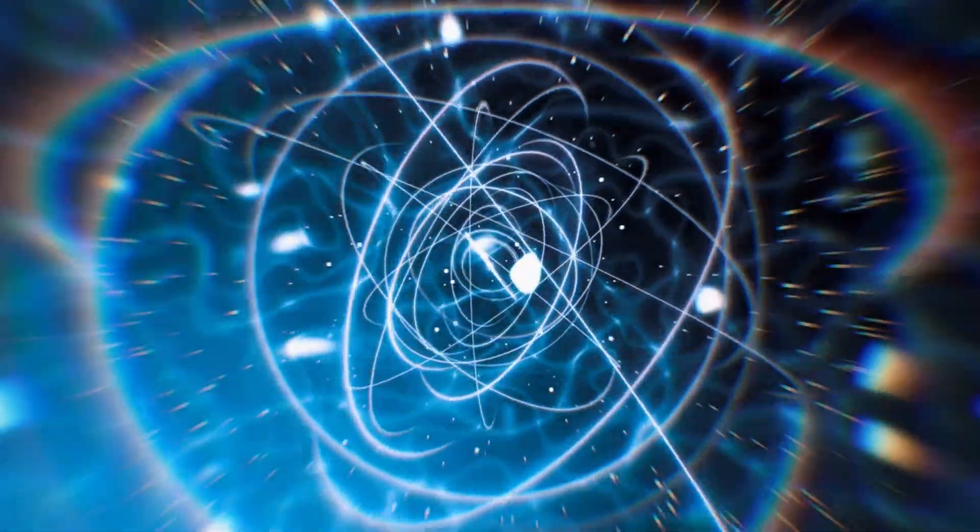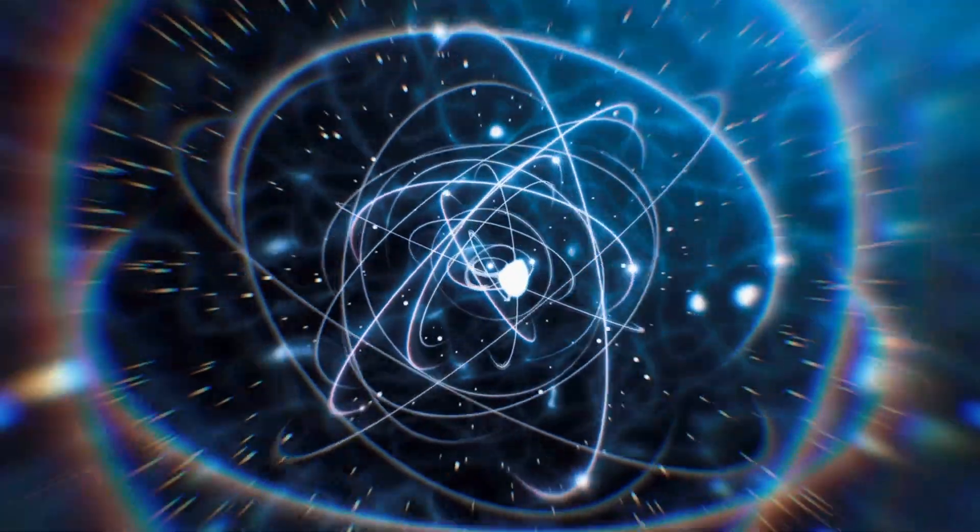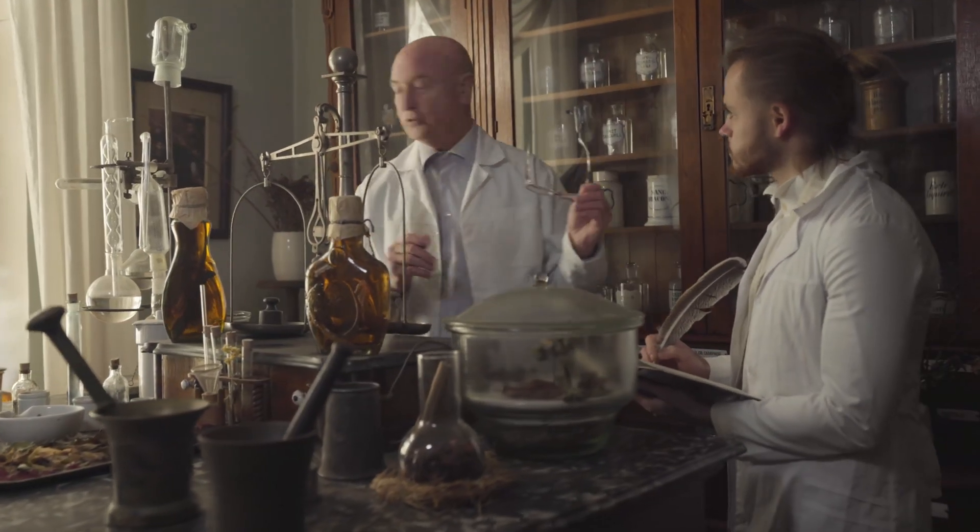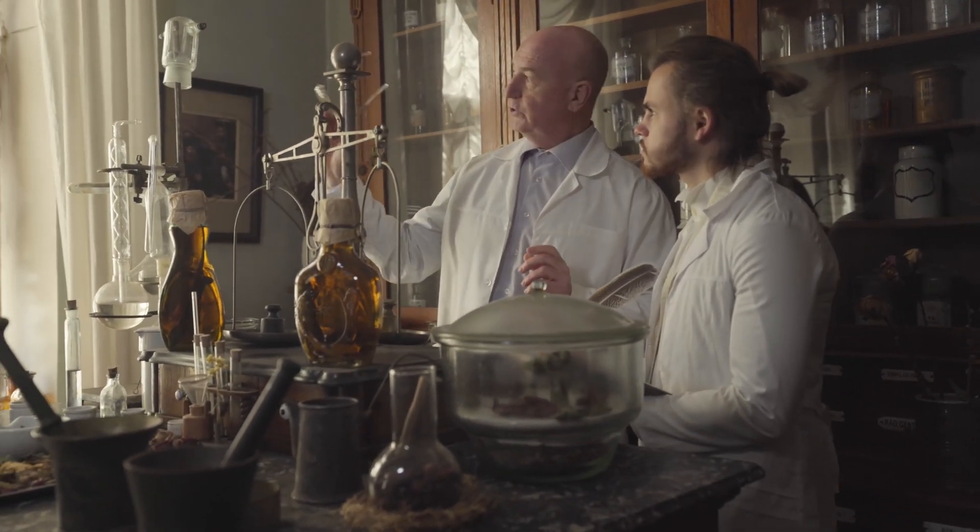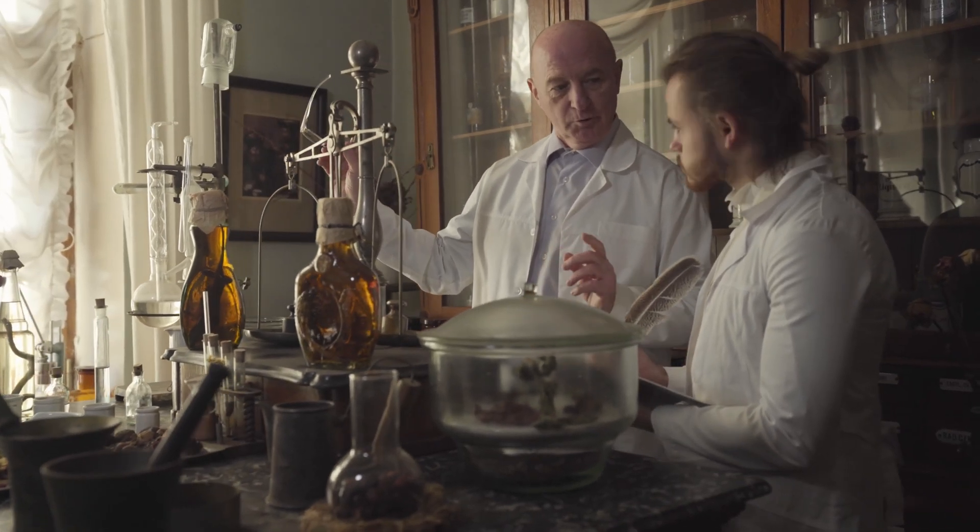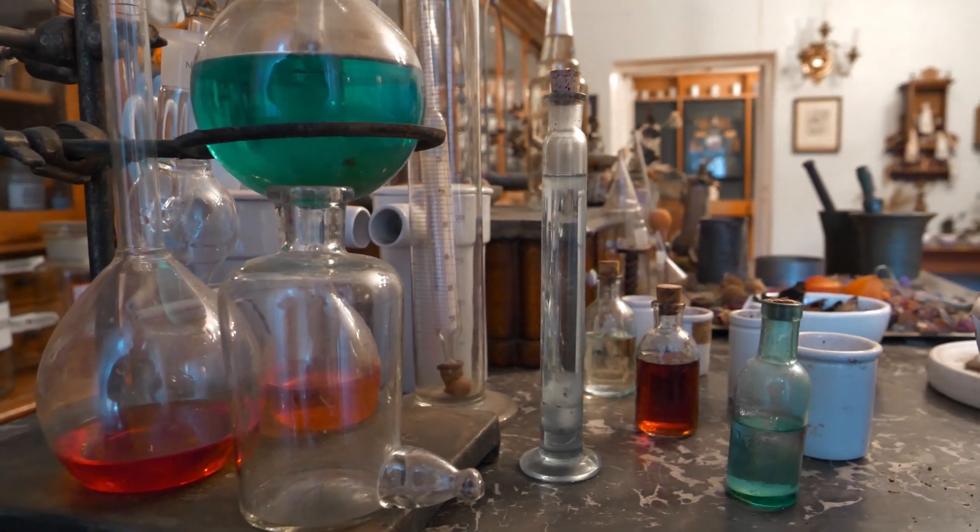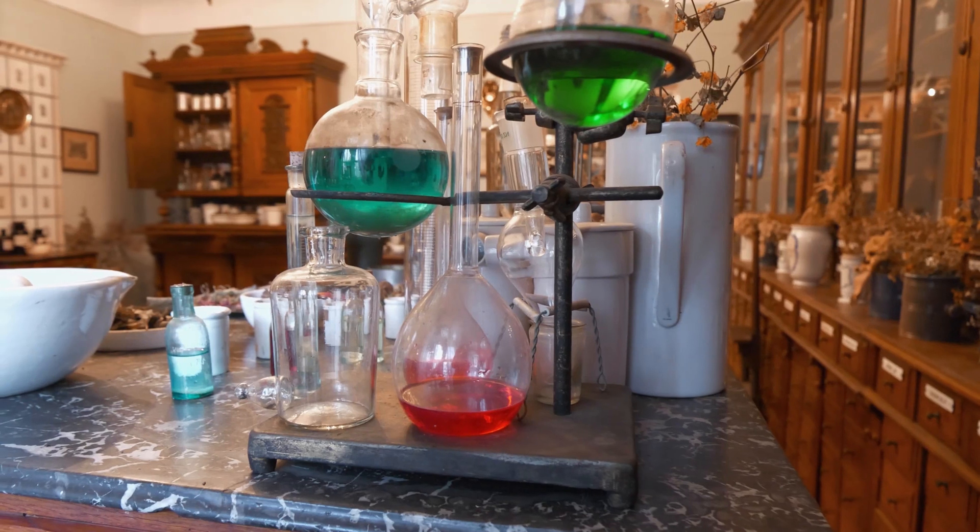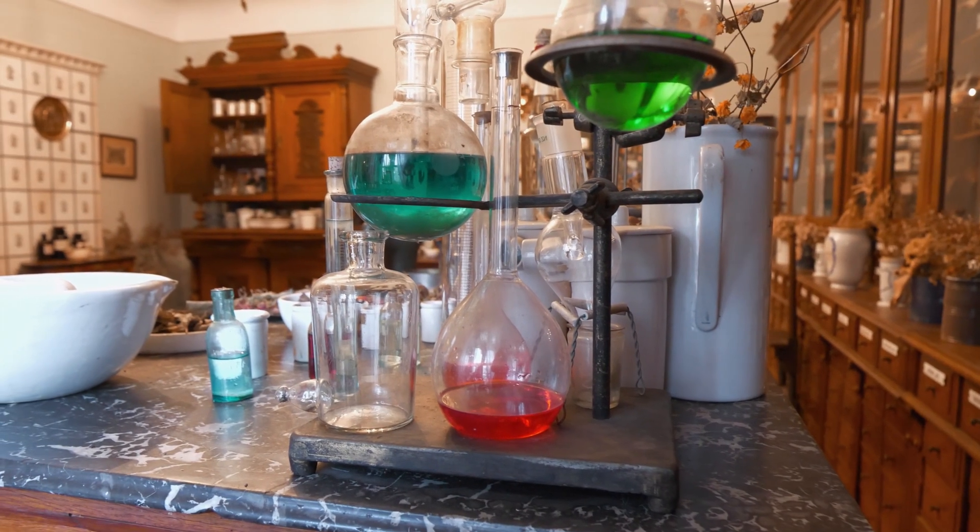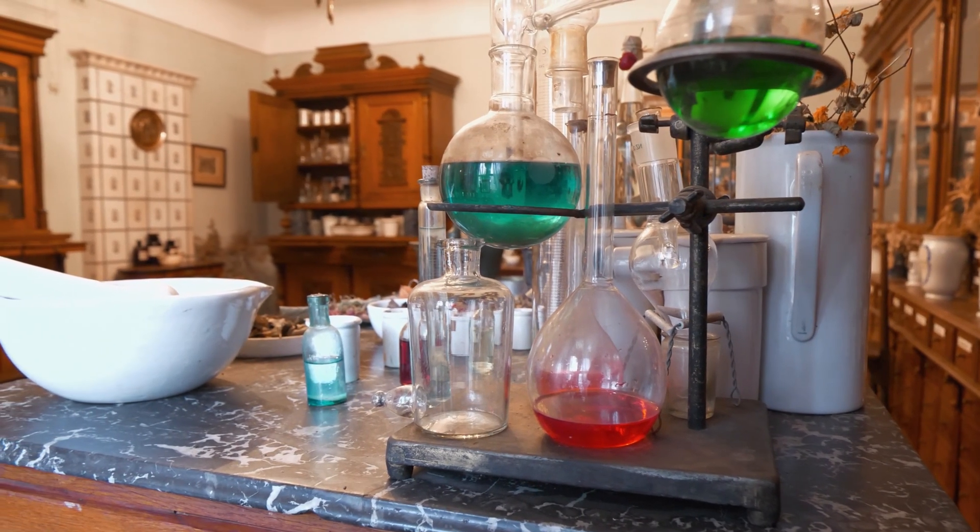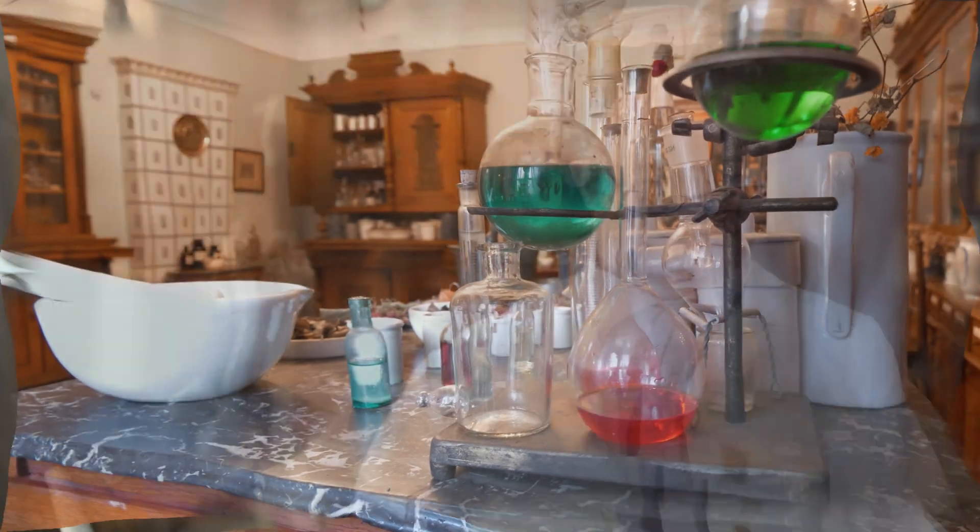After recognizing that didymium was likely a mixture, Welsbach had another puzzle to solve. How do we separate these two components? This was no small feat, as the elements had nearly identical chemical properties. He used careful and precise chemical methods, likely involving fractional crystallization, a process where small differences in solubility are used to separate compounds. During fractional crystallization, Welsbach would dissolve didymium compounds in a solution and then gradually cool the solution to precipitate out different salts. Because neodymium and praseodymium had slightly different solubilities, he was able to isolate them into separate substances through multiple rounds of crystallization.